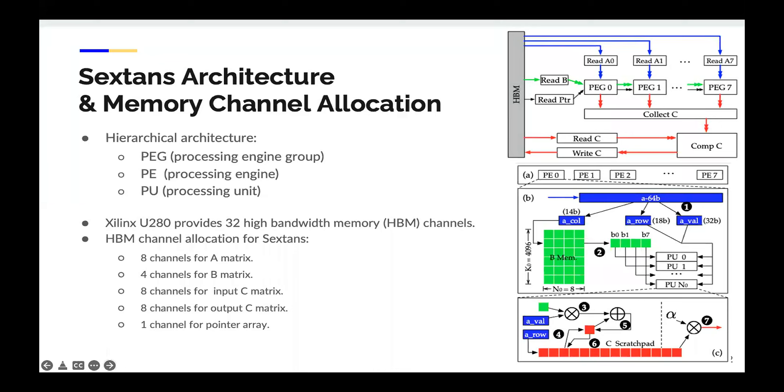In this slide, we show the fixed-sized architecture and the memory channel allocation. Sextense includes three levels of hierarchies: the PEG level, the PE level, and the PU level. At the PEG level, we deploy eight PEGs, the read and write modules for the three matrices, and a module to perform the computation on the scalar constant for the C matrix. A PE is responsible for the computation on the sparse matrix block. At the PU level, we design the computation on the scalars. A Xilinx U280 FPGA board provides 32 high-bandwidth memory channels. In this design, we allocate eight channels for the sparse A matrix, four channels for the B matrix, eight channels for the input C matrix, and other eight channels for the output C matrix. Finally, we deploy one channel for the pointer queue.